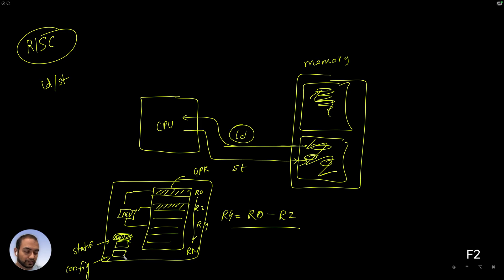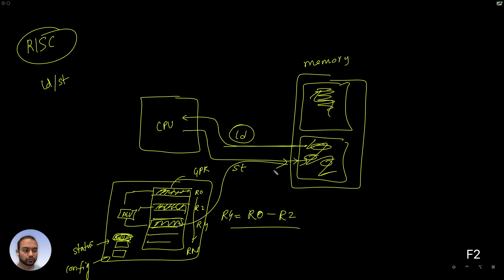The key idea that we are going to use over and over again is that the data needs to be fetched into the CPU first, like into R0 and R2 registers. Computation needs to be performed. And then the answer, stored in R4, needs to be stored back to the memory. So that is the model that we will follow, and we keep reusing and revisiting this mental model — it's super important.